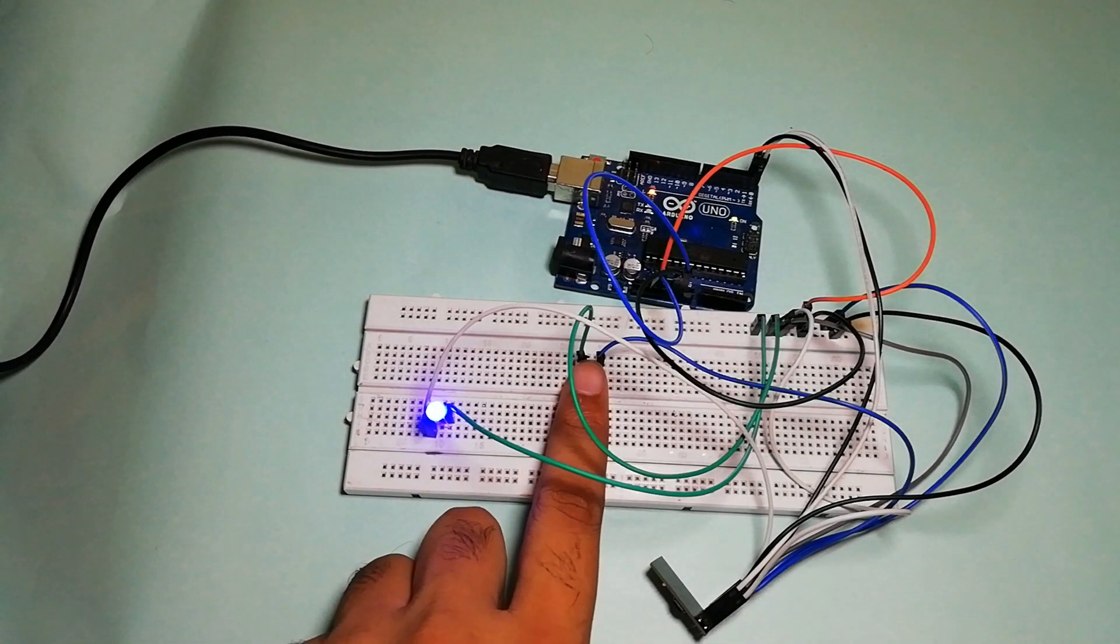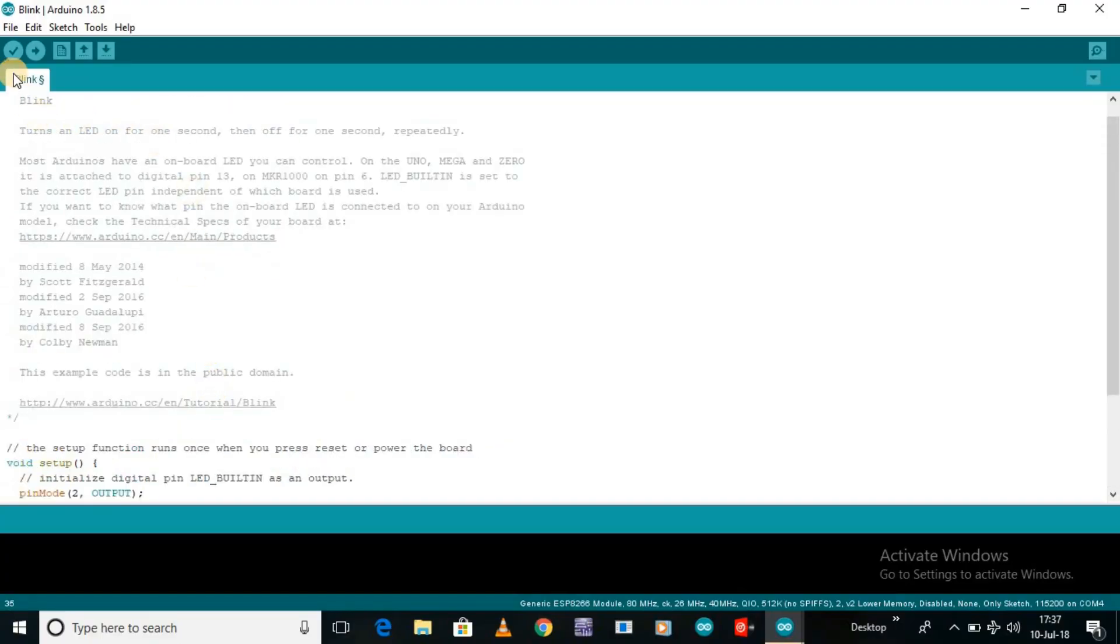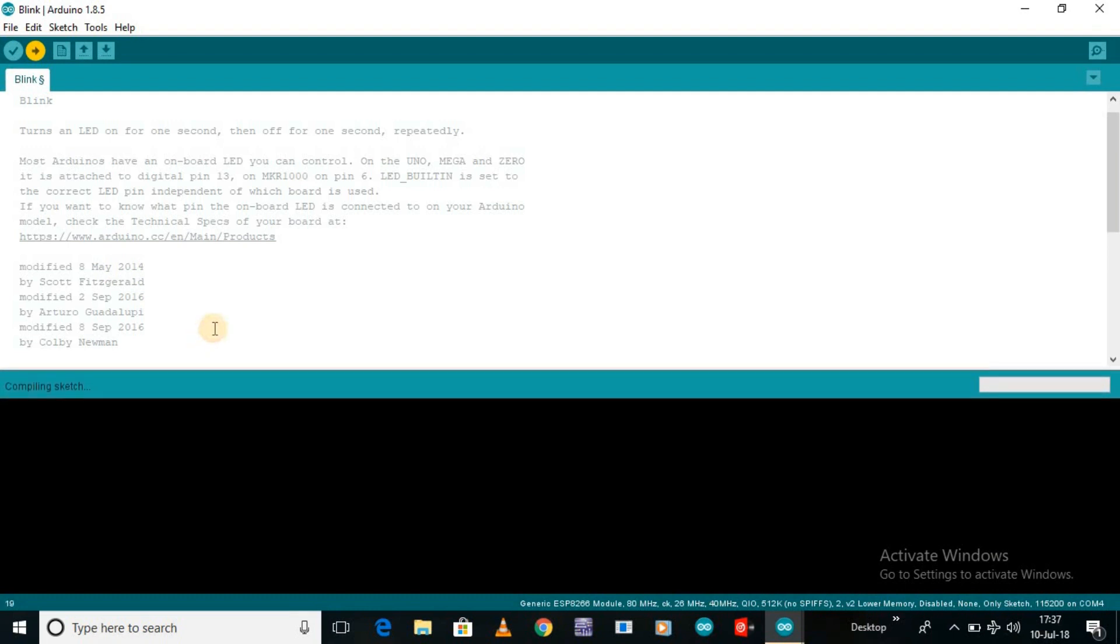And then press this push button to reset the ESP8266 module. Hit the upload button and the code will take a while to compile and upload. We can see the progress at the bottom of the IDE. Once the program is successfully uploaded, we can remove the GPIO 0 from ground. The LED connected to GPIO 2 will blink. Generally, ESP8266 takes longer time to compile and upload the program as compared to Arduino.